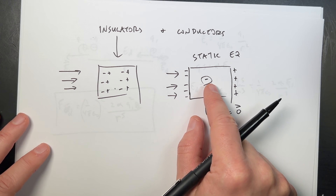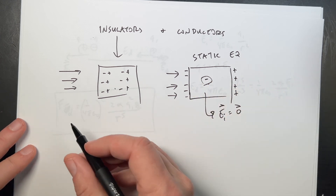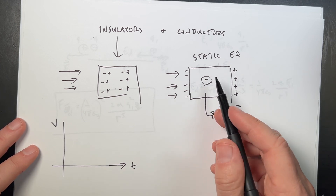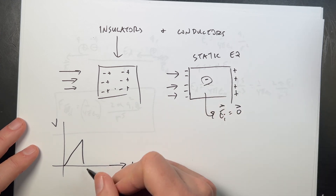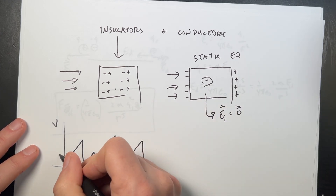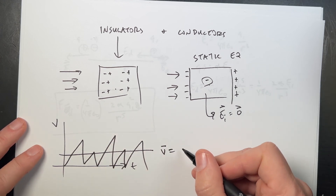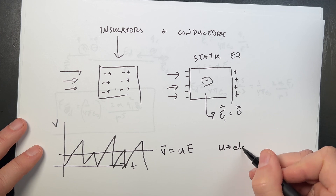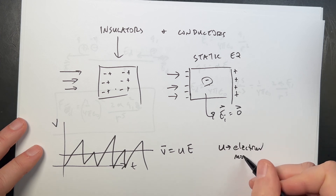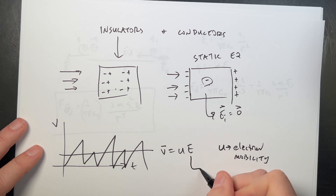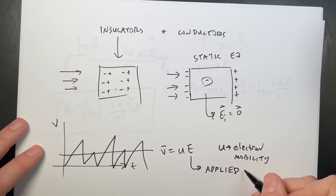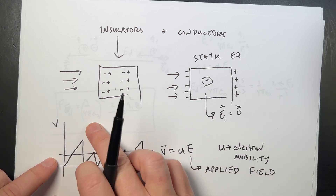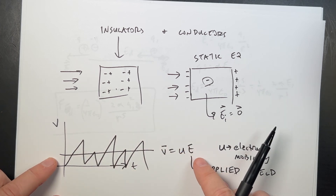When we do have a non-zero electric field inside a conductor, the charges move. They accelerate, collide with atoms and stop, then accelerate again, stop, accelerate, stop — giving some average velocity. We call that the drift velocity, V_d = u × E, where u is the electron mobility and E is the applied field. If you increase the field, the electrons accelerate more and we get a greater average drift velocity. This will be really important later when we talk about electric circuits.